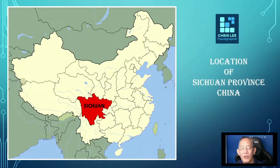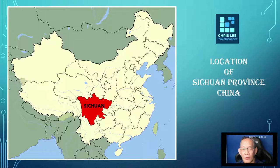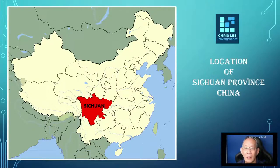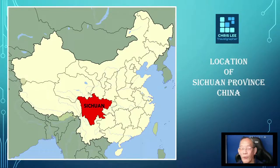Currently, Sichuan has a population of around 83 million. Sichuan is neighbouring to Qinghai to the northwest, Gansu to the north, Shaanxi to the northeast, Chongqing to the east, Guizhou to the southeast, Yunnan to the south, and the Tibetan Autonomous Region to the west.